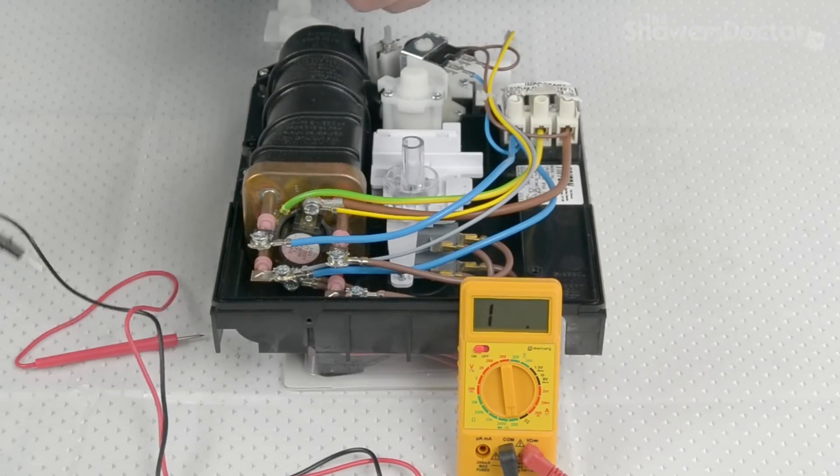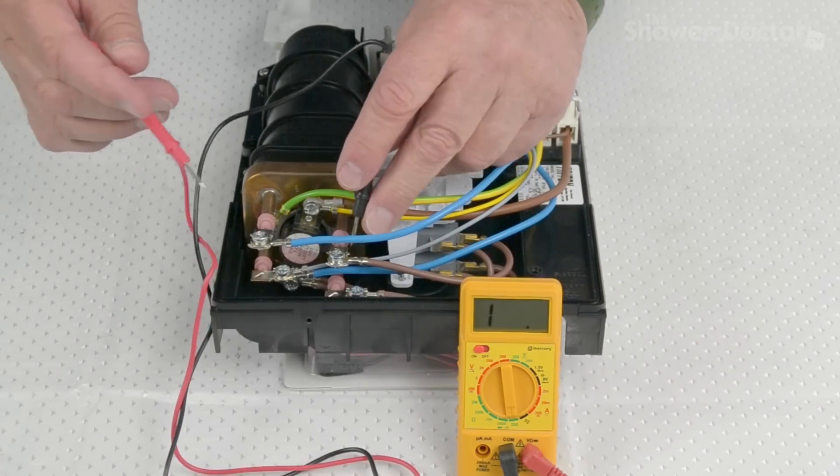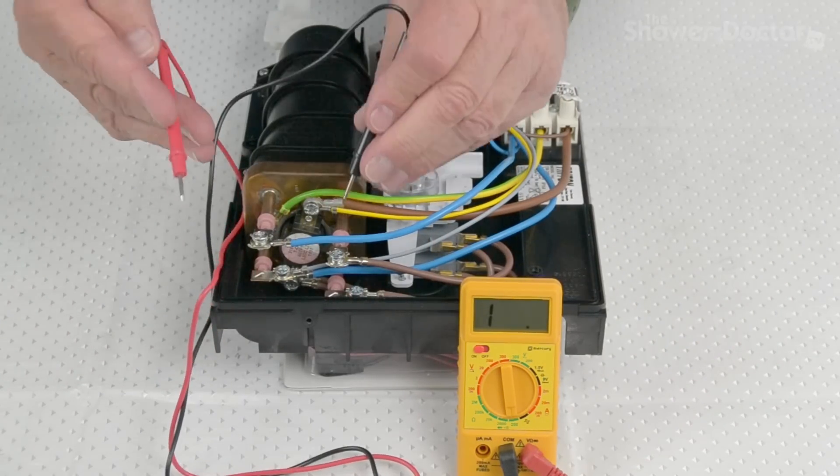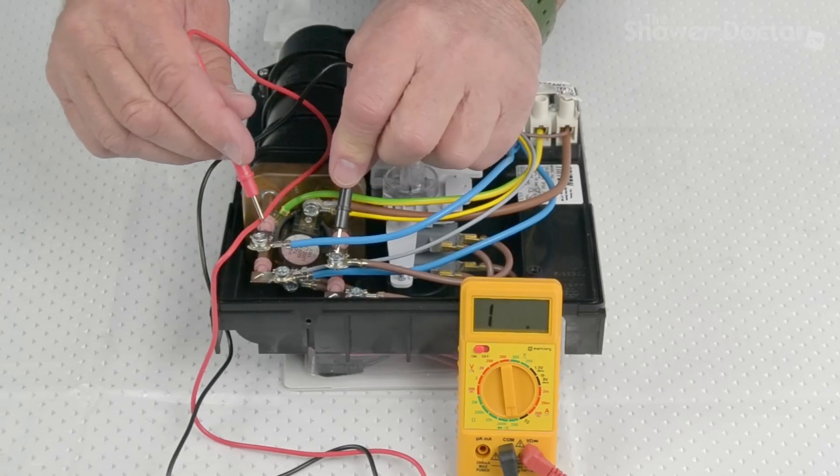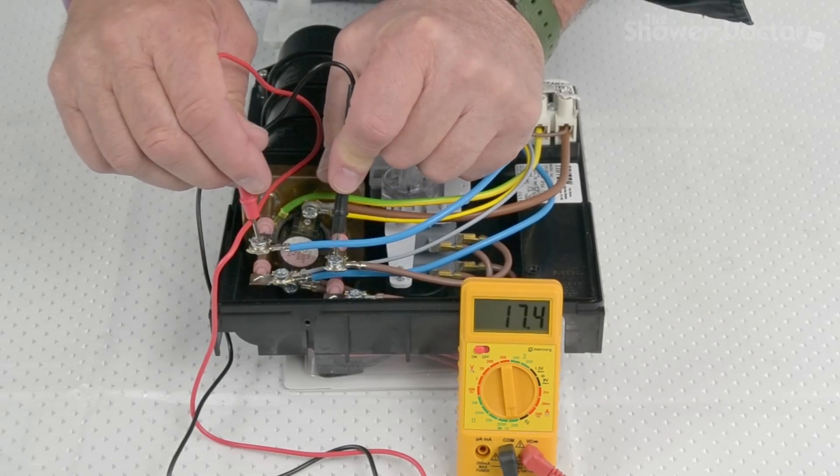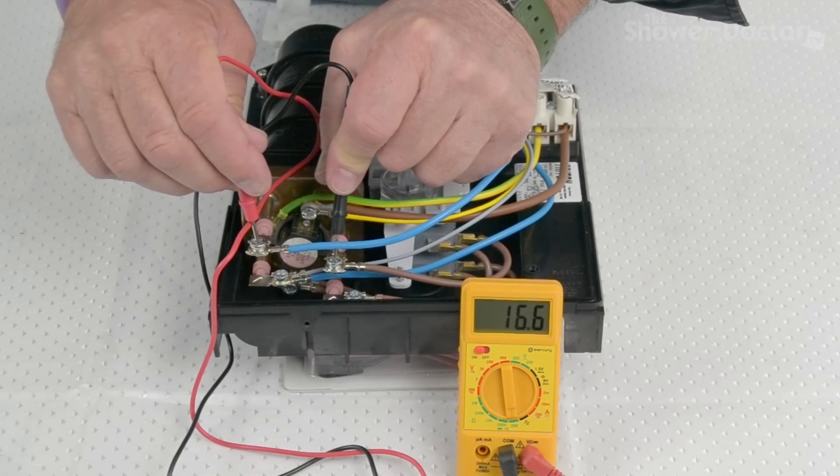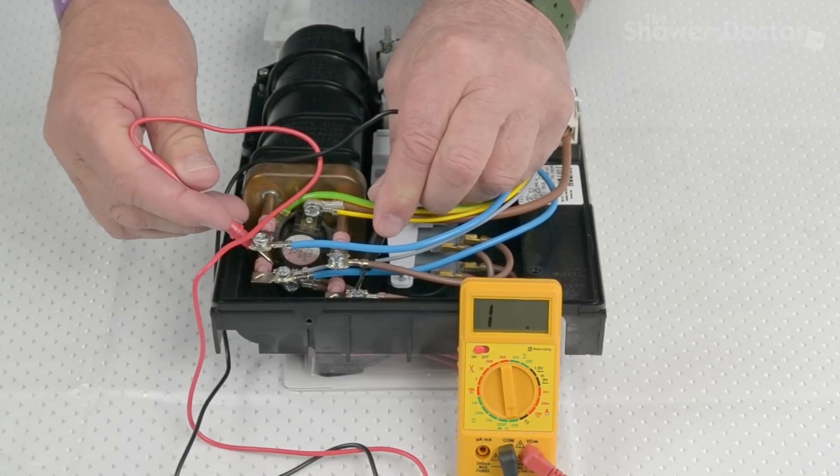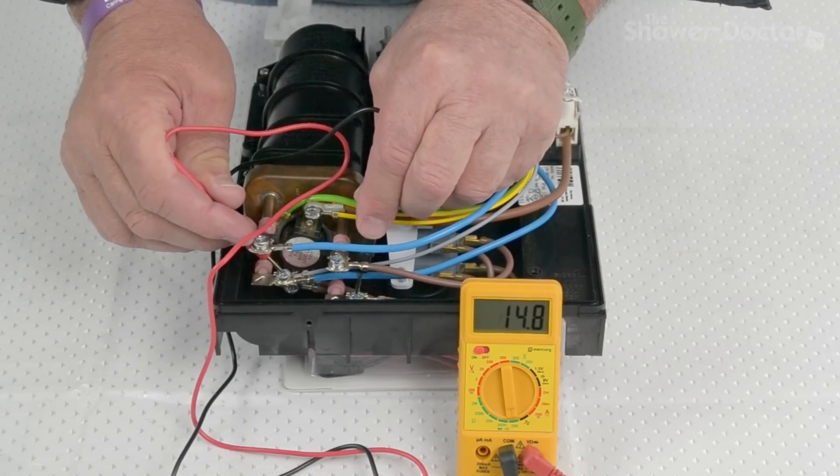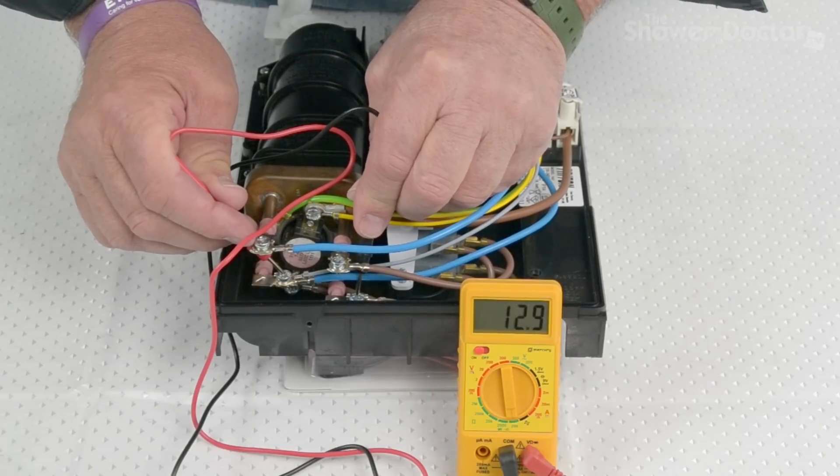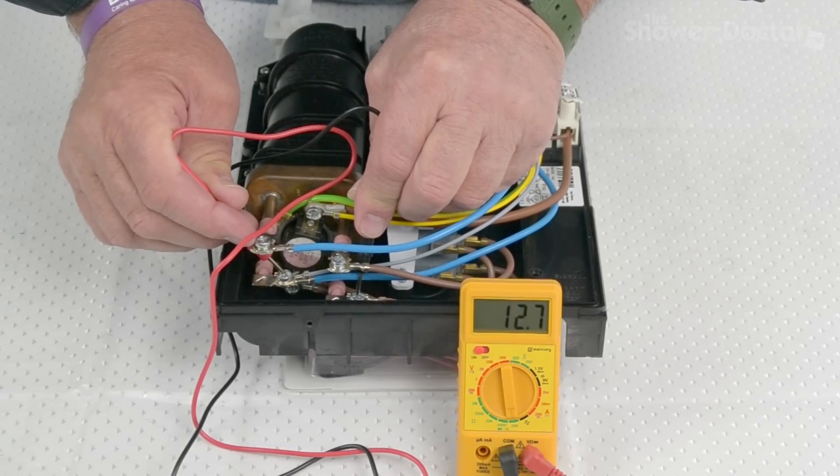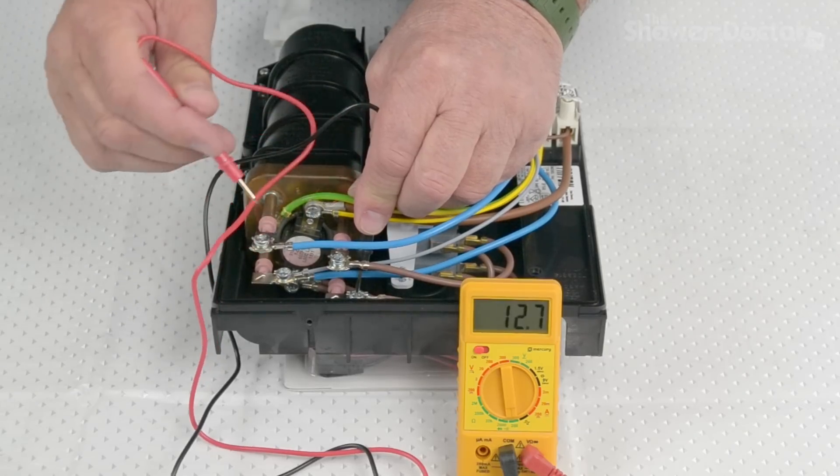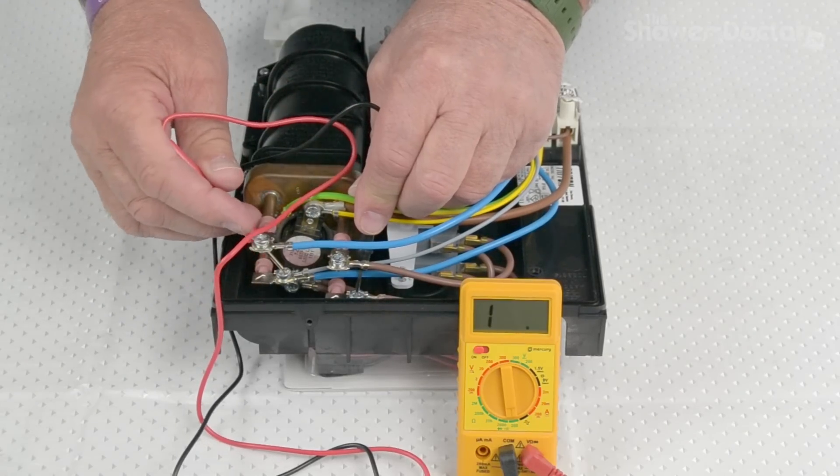And so once again, the polarity doesn't matter, but we're checking the resistance across the elements. So that's the live and the neutral. And in this element, we have about 16 ohms. And then down here, there's the other element. And we have, I don't know for this one, about 12 ohms for this one. So 16 ohms and 12 ohms, that's okay.